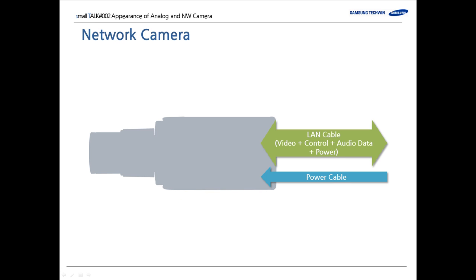Moving on to the next. Let's talk about the network camera. Simply speaking, a network camera transmits video data in digital signal through the Ethernet cable.